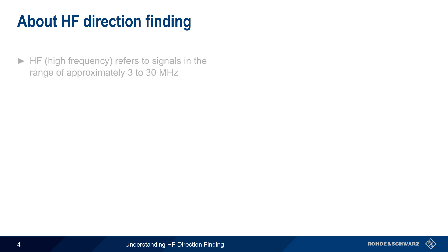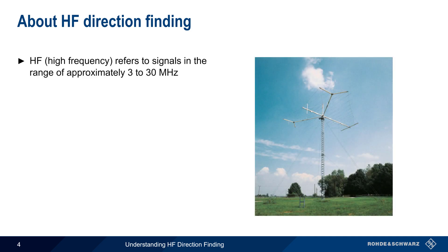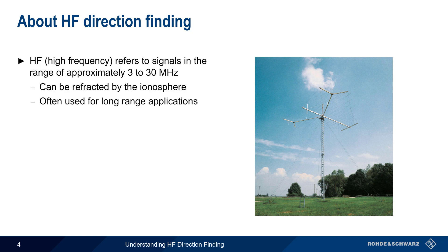HF, or high frequency, refers to signals in the range of approximately 3 to 30 MHz. Under the right conditions, these signals can be refracted or bent back down towards Earth by the ionosphere. This refraction makes HF well-suited for very long-range applications. In many cases, global coverage is achievable using HF.